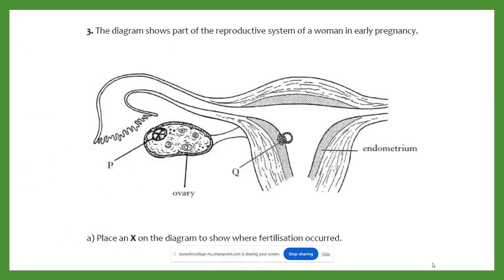In terms of a past paper question, it's really about identifying that site, maybe talking about how these two cells come together. Pause the video and try this question. You've been asked to place an X on the diagram to show where fertilisation has occurred. As long as it's clearly within the oviduct, you would get the mark for this question.